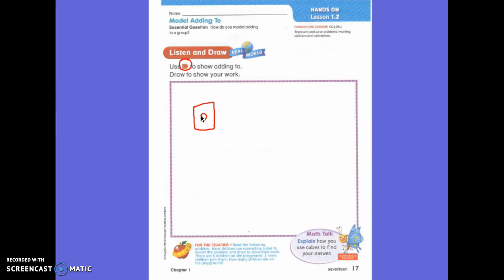So how many children are on the playground? So how many children were there to start with? Six. So you should have drawn six cubes. How many children join them? Two. So you should have drawn two more.